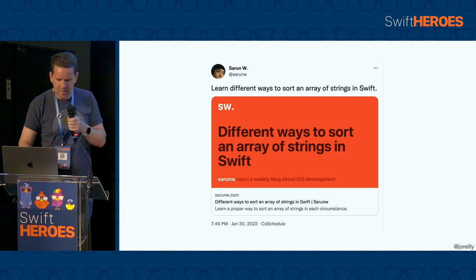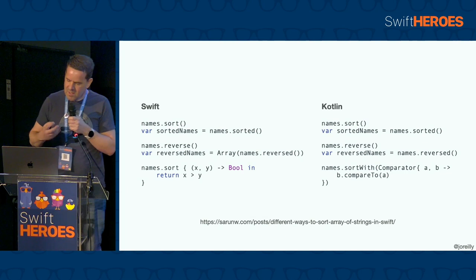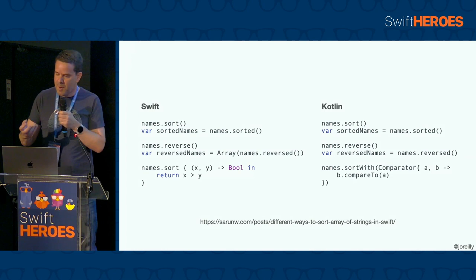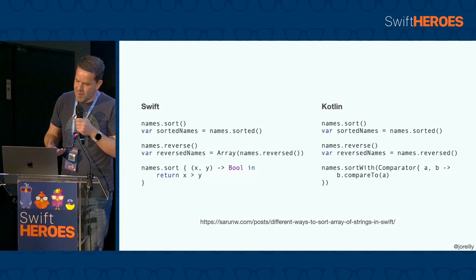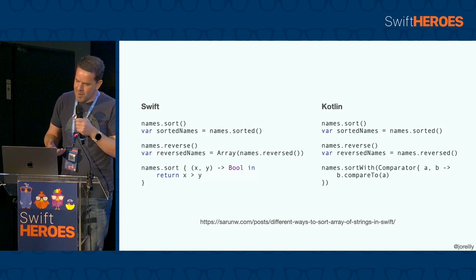A few more from that article — iterating over maps shows even closer similarity, again map declaration aside. Lastly in this section, another recent article from Sarun talking about sorting Swift arrays. We see the similarities — the API is almost identical in the initial two examples, though a little difference in what reverse represents in Swift, and then a few differences in how we set up a custom comparator. But again, easy to understand either approach. We'll see some additional language comparisons in the next sections on declarative UI and structural concurrency.